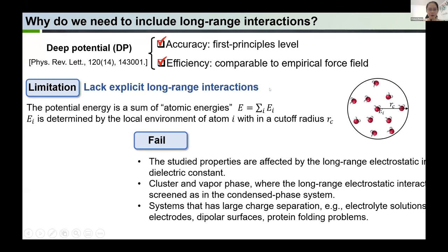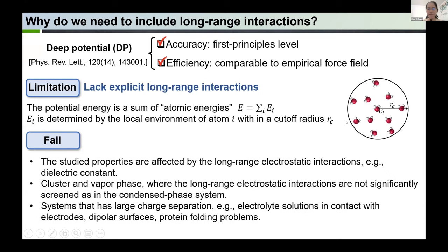This approximation of DP works well in many cases. However, in some occasions it fails. For example, when the studied properties are affected by the long-range electrostatic interactions, such as the dielectric constant. Also for cluster and vapor phase, while the long-range electrostatic interactions are not significantly screened as in the condensed phase system, and also for systems that have large charge separation — for example, electrolyte solutions in contact with electrodes, bipolar surfaces, and protein folding problems.